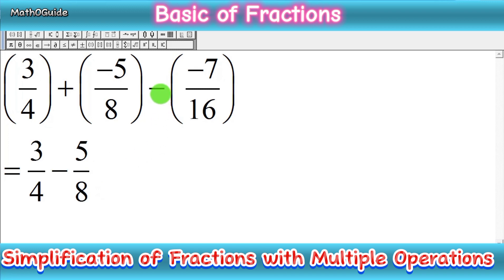In the last step, we have negative times negative, which becomes positive. The fraction is 7/16. Now we have a simple form of addition or subtraction. For adding or subtracting fractions, we need to find the least common denominator.